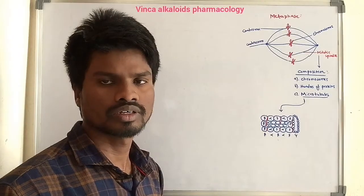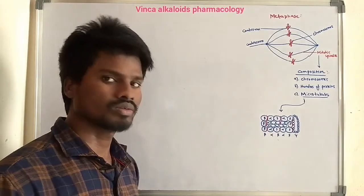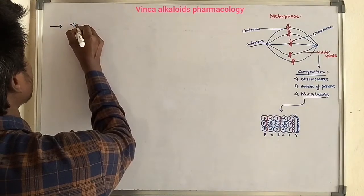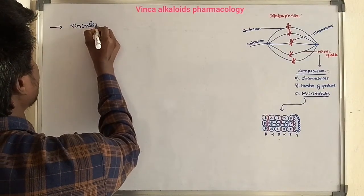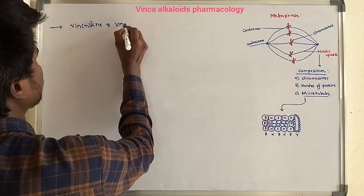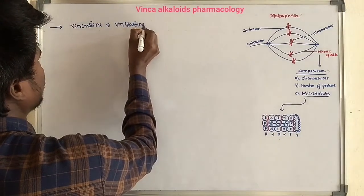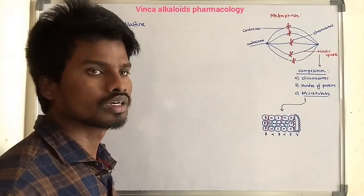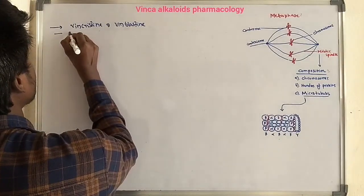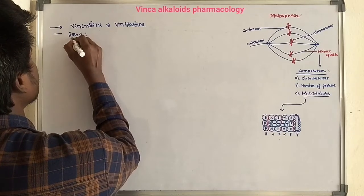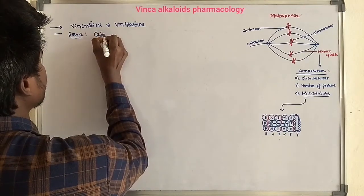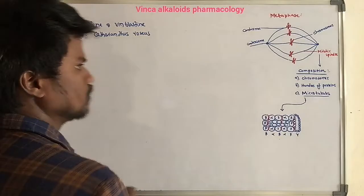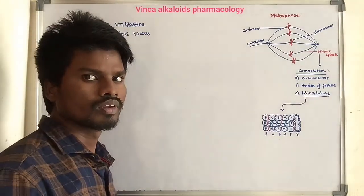Vinca Alkaloids are used in cancer chemotherapy. The important agents of the Vinca Alkaloids are Vincristine and Vinblastine. The biological source of the Vinca Alkaloids — they are obtained from Cataranthus roseus.